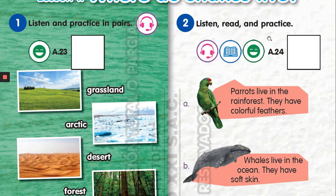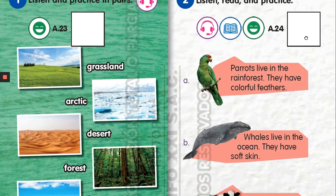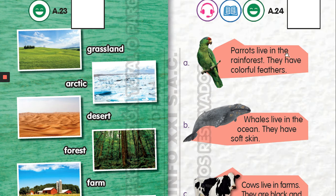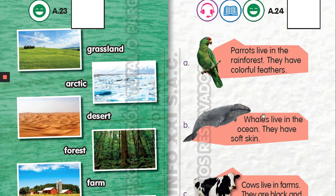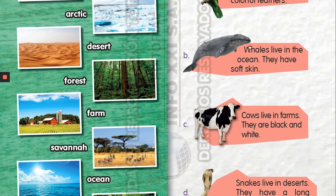Next point: Listen, read and practice. Parrots live in the rainforest, they have colorful feathers. Los loros viven en la selva, ellos tienen plumas coloridas. Colorful feathers.